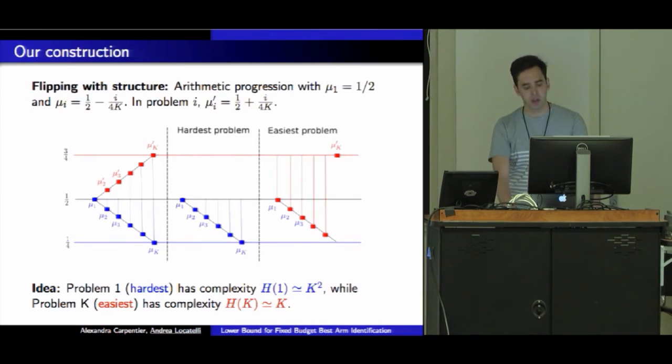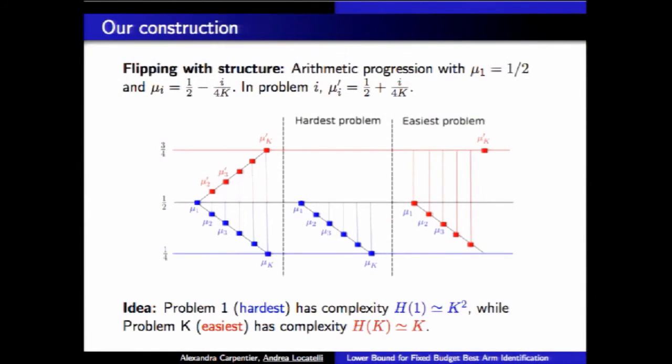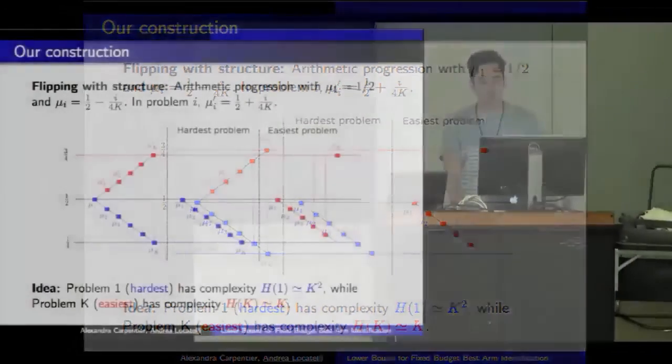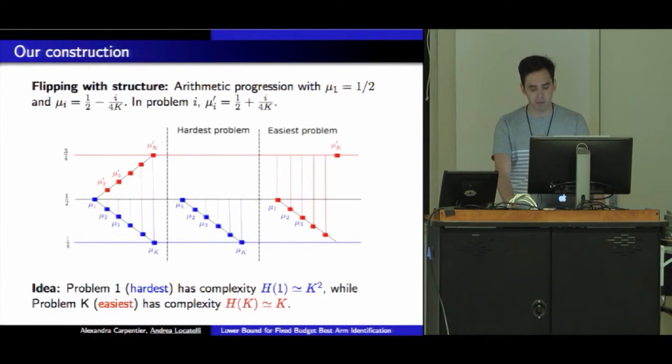We gave even more information to the algorithm. We restricted the environment to this arithmetic progression that you can see here. What happens is the hardest problem, as before, is still problem 1, but the easiest problem is really easy now because if I flip the last arm and put it in 3/4, then all other arms are bounded away from this arm. Complexity H_1 for the hardest problem scales with K to the power 2, and for problem capital K, the easiest problem, I have complexity that scales with K. I've created a rich enough class of problems for a more refined analysis.